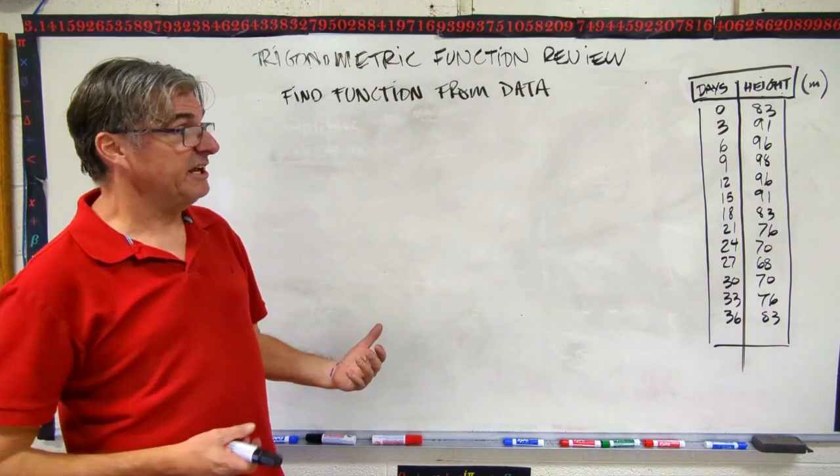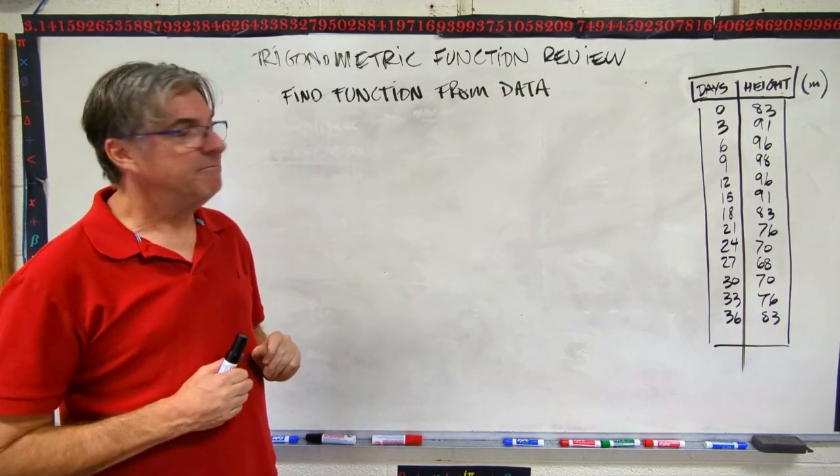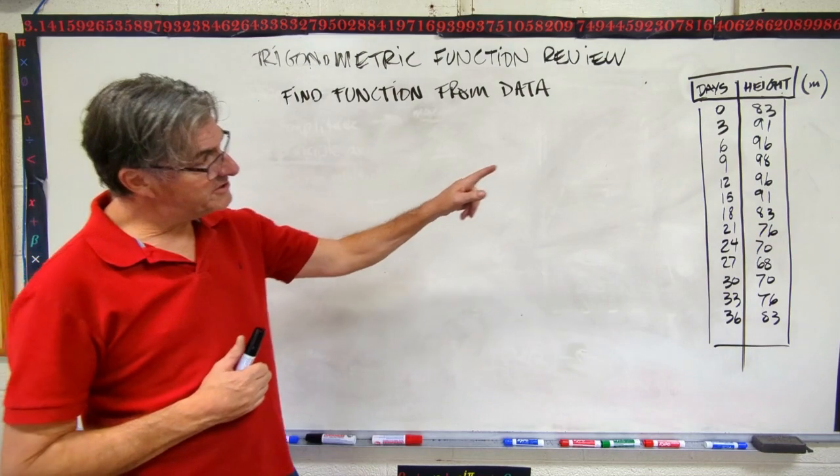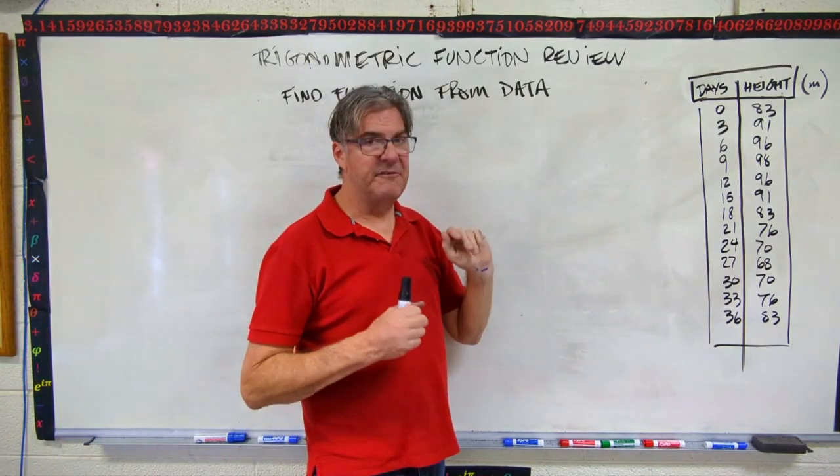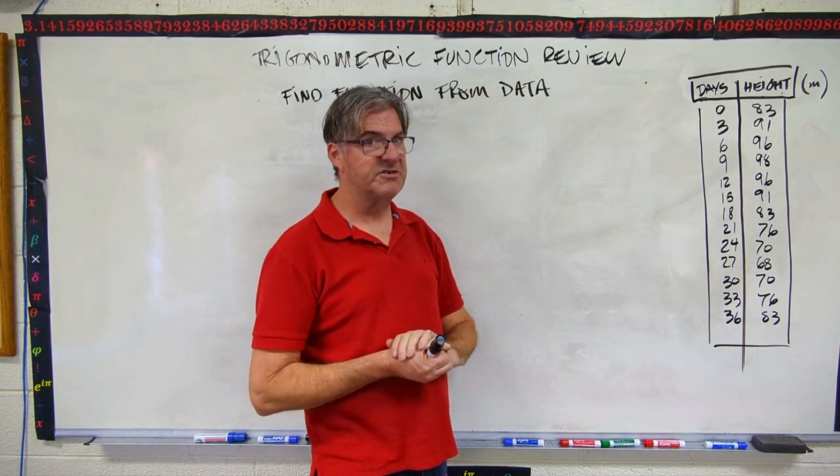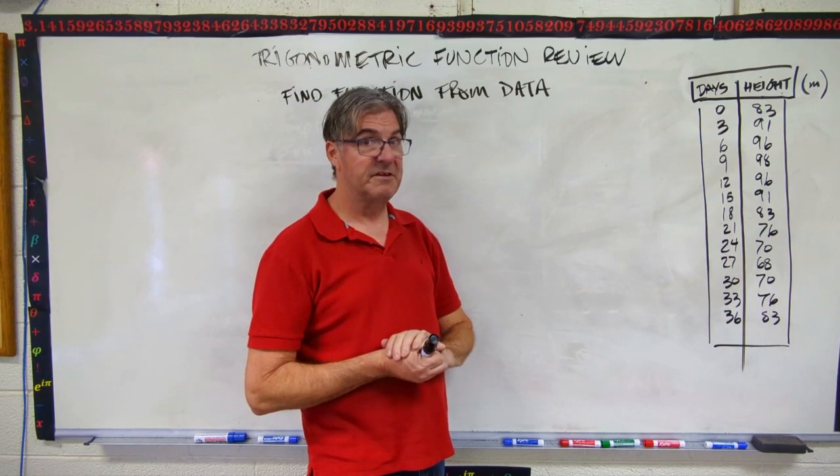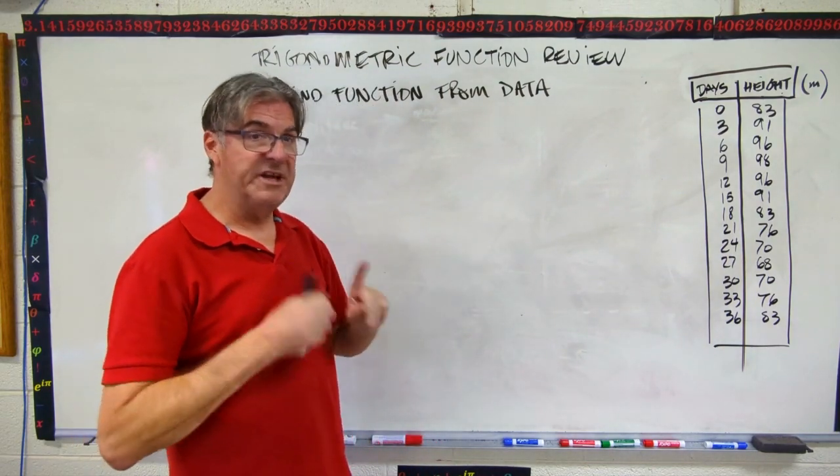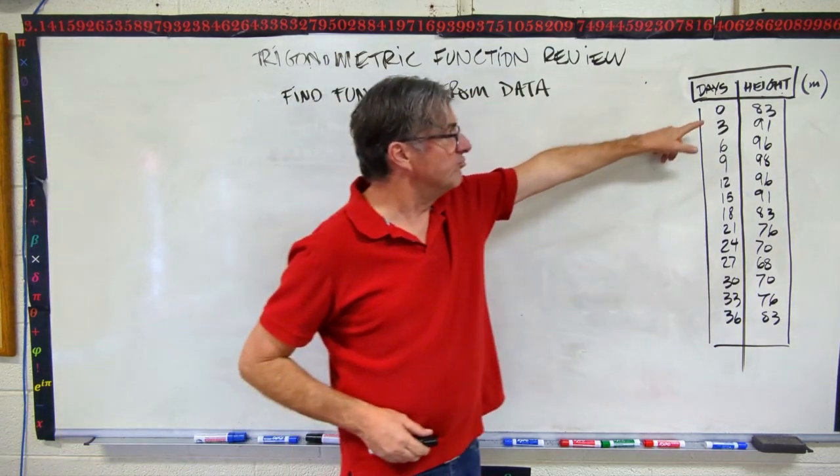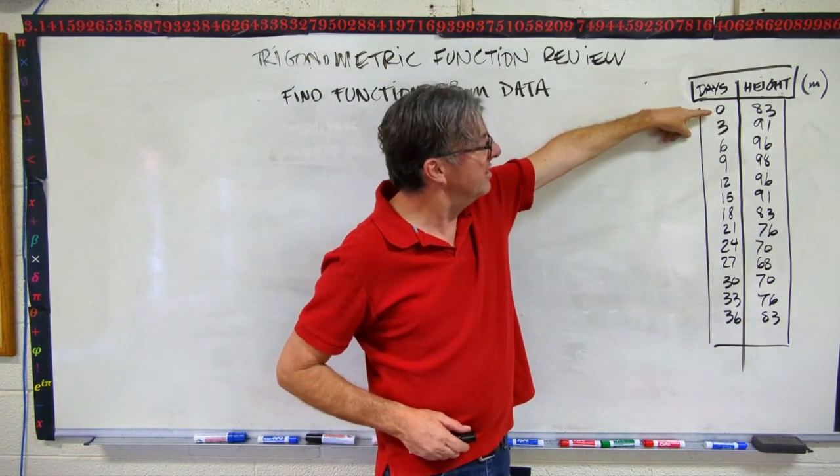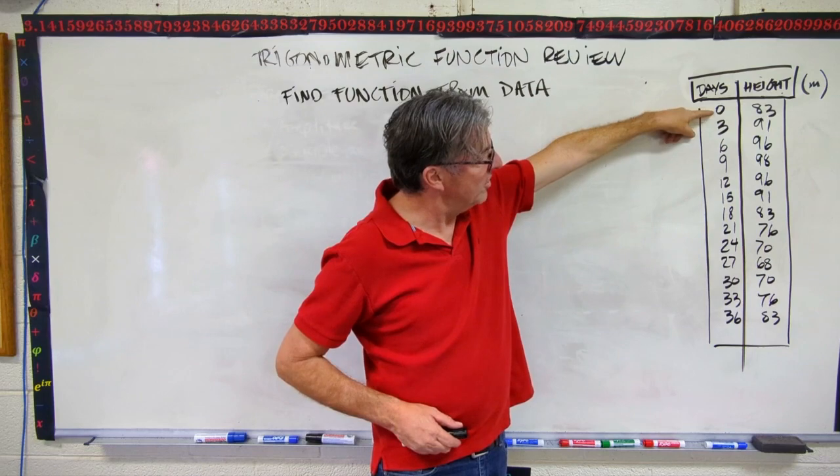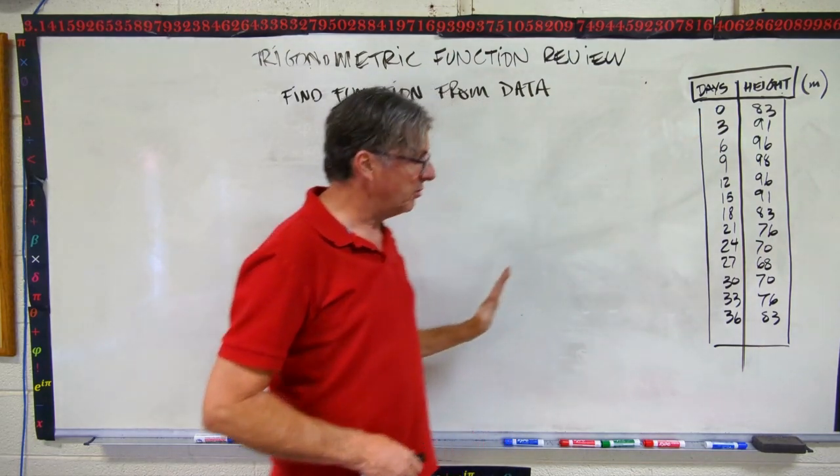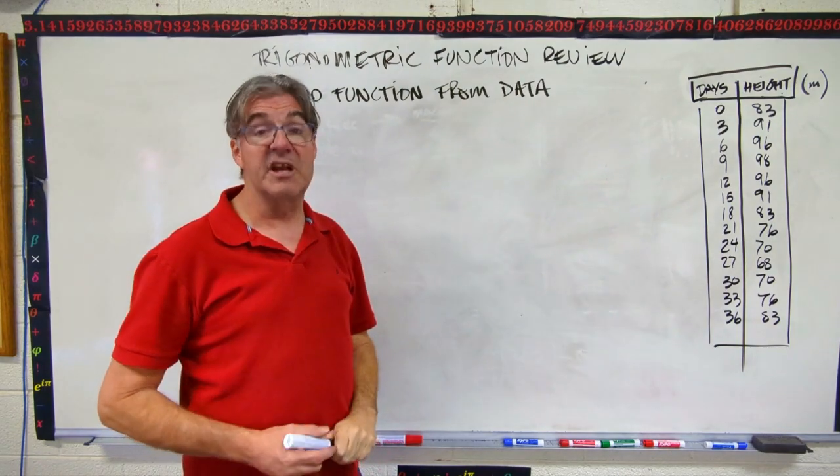Okay. Now, this can be a little tricky. First question. Is this sine or cosine? Take a look at this data and tell me if you can figure out whether it's sine or cosine. Okay. In our example, in our work, we noticed that sine always rises first before it drops. And so you can see from zero to three days, we're up at 91. Six days, we're up at 96. So we're going up first. So that's going to be sine.